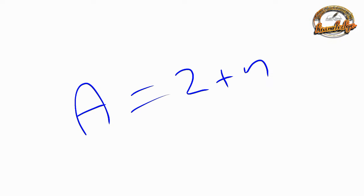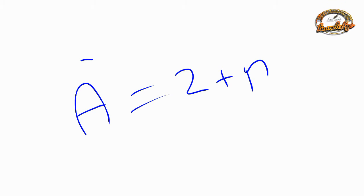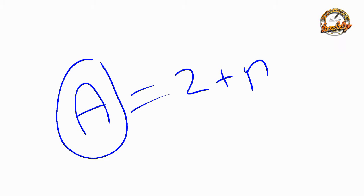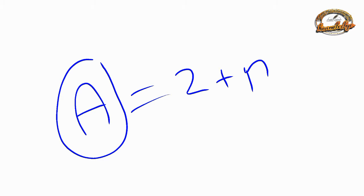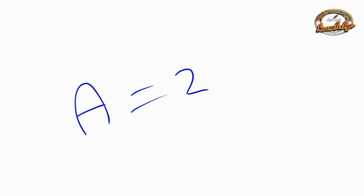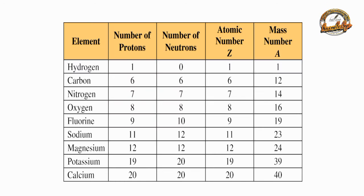The meaning of this formula: mass number we represent as A, atomic number as Z, and N is the neutron number. The mass number equals the number of protons plus the number of neutrons.